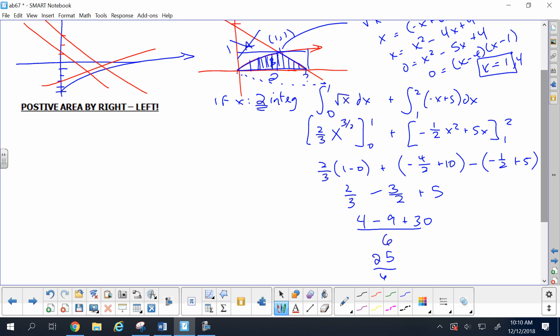The first region is 2 thirds of 1 minus 0. The next is negative 4 over 2 plus 4 minus negative 1 half plus 2. So I get 2 thirds minus 4 halves minus negative 1 half is negative 3 halves, and 4 minus 2 is 2. Common denominator is 6, 4 minus 9 plus 12 is 7 over 6. That's more like it, that's reasonable.